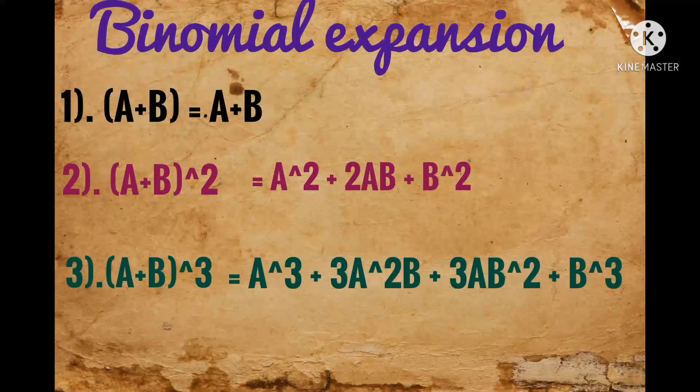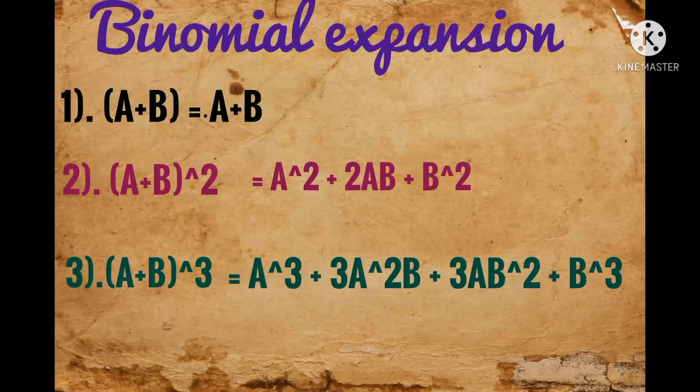The third line gives 1, 3, and 1 as the coefficient of (a + b)³, and so on.